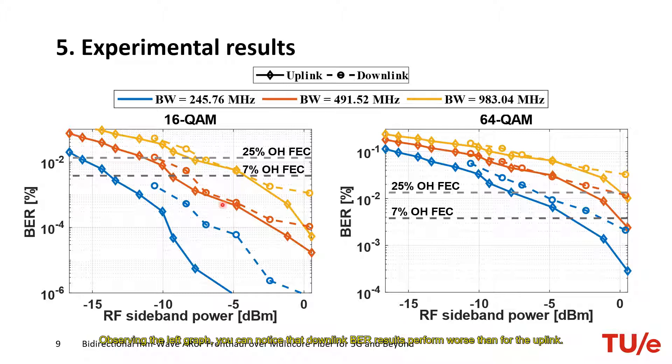Observing the left graph, you can notice that the downlink BER results perform worse than for the uplink. This fact is because there are more nonlinearity effects in the downlink than in the uplink. In addition, inspecting the left graph, all the BER results are under the 7% limit for the maximum power. In the right graph, all the BER results are below the 25% limit for the maximum power, except at this point. Thus, these results show the validity of the proposed experimental setup to be part of the future millimeter wave 5G network.